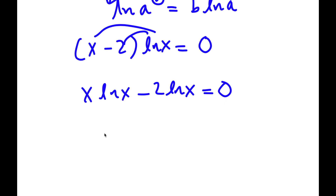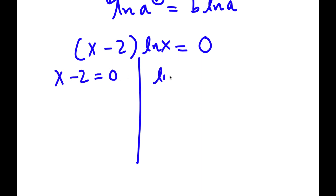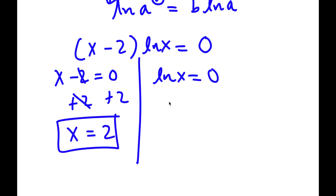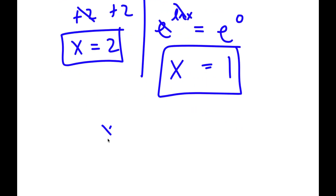From here, I'm going to set this into two equations: x minus 2 is equal to 0, and ln x is equal to 0. So x minus 2 equals 0 — all I have to do is add 2 on both sides, and I get x is equal to 2. That's one solution. For ln x equals 0, I'm going to take e to the power of both sides. e to the power of 0 is 1, and e to the power of ln x — e and ln cancel out — so I'm left with x. So x is equal to 1. My two solutions are x is equal to 2 and x is equal to 1.